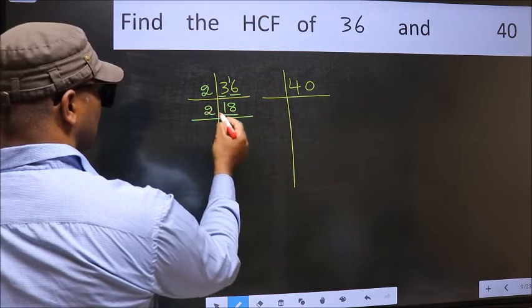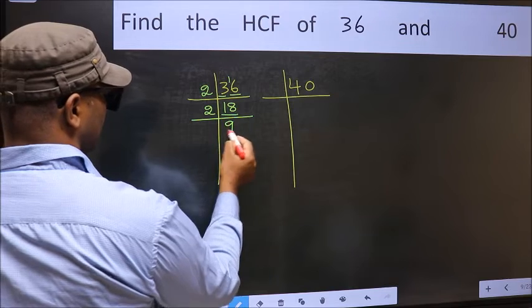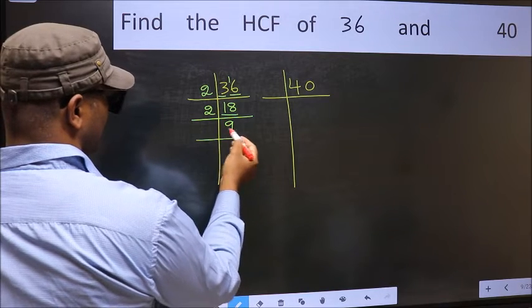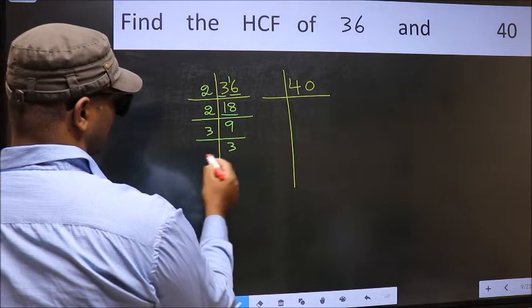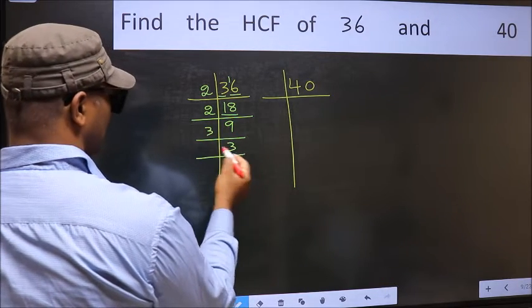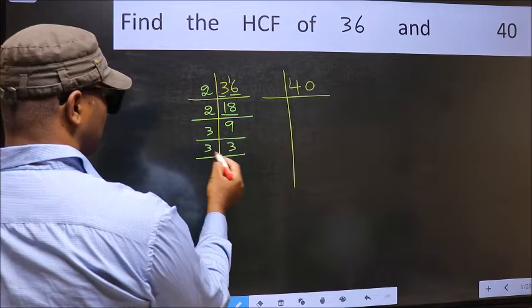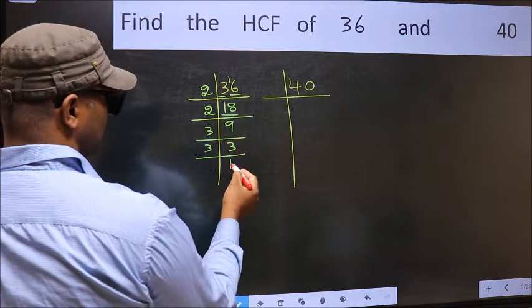Now 18 is 2 times 9. Then 9 is 3 times 3. Now 3 is a prime number, so 3 times 1 is 3.